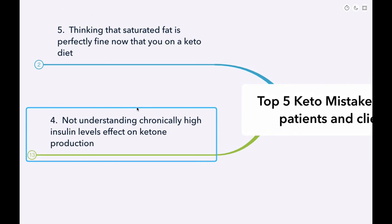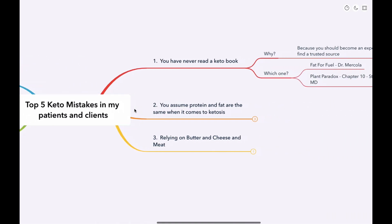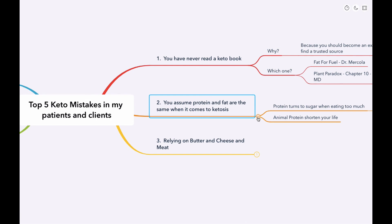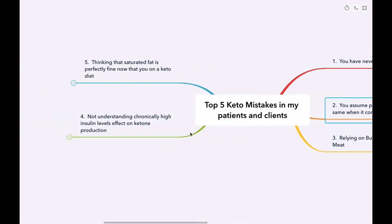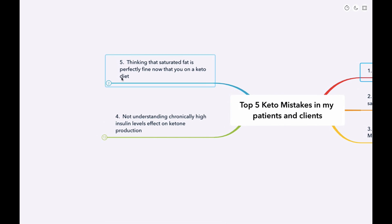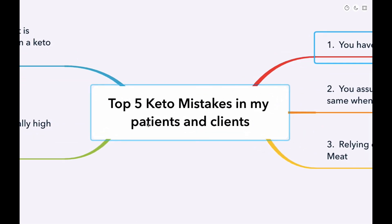So, I hope you understand these top five keto mistakes that I see. There are many other mistakes people make that I alluded to in this video, but to review them in general, you've never read a book, please go read a book. You assume protein and fat are the same, you've got to avoid, I should say, you've got to reduce the amount of animal protein that you're eating. It shortens your life, relying on butter, cheese, and meat. Don't be one of those keto people that just eats butter, cheese, and meat. It is not good for you. Not good for you at all. Thinking that saturated fat is perfectly fine. It's not for a significant number of people. And not understanding insulin and ketones. So, those are my top five keto mistakes. Thank you so much for your attention. Love making these videos. Click that little bell to subscribe to my videos so that you can see more. And I look forward to seeing you next time on the channel that focuses on making you your own authority in health. This is Dr. Karp. Have a great day.